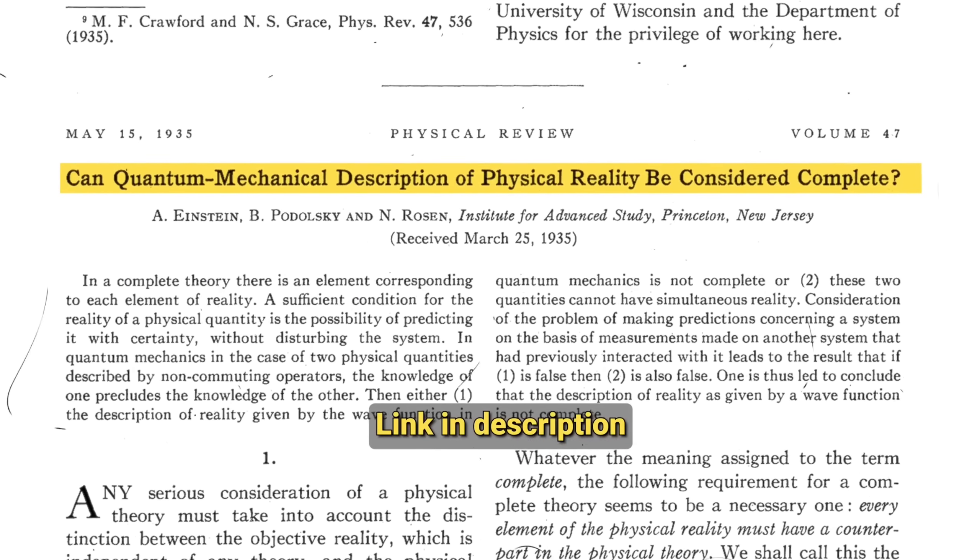Because Alice could measure either of hers, and depending on which she measures, she can make Bob's system have a definite value of one observable or the other. If Alice is not really changing Bob's system, Bob's system must have known all along what it was going to yield. They call their paper 'Can the Quantum Mechanical Description of Reality Be Considered Complete?' They're saying that unless you allow something faster than light, Bob's system must already know the answers — so what EPR establishes is a logical fork: either you allow faster-than-light causal influences, or there are hidden extra parameters and the wave function is incomplete.